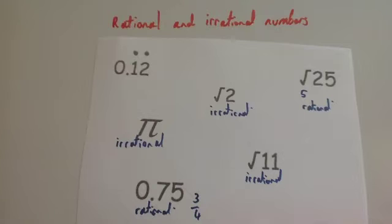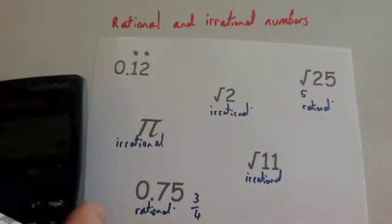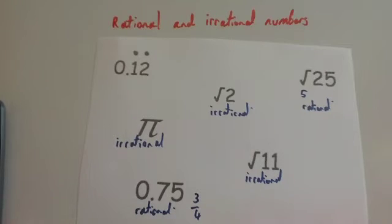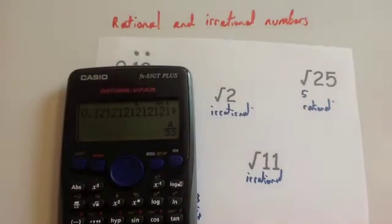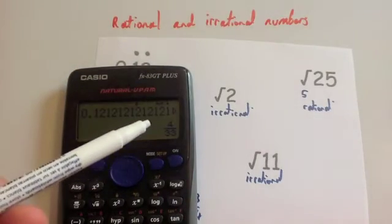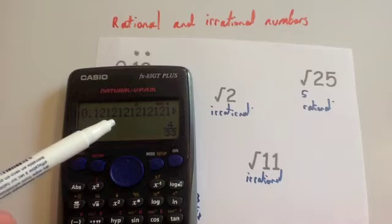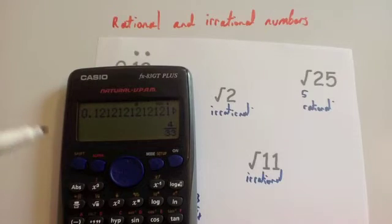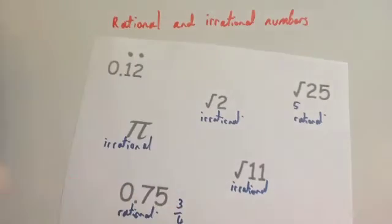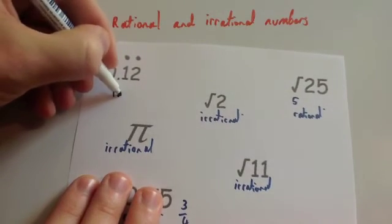There's a video on how to convert recurring decimals into fractions. Therefore, because it's a recurring decimal, you can write it as a fraction. I've actually used my calculator to help me, and it's told me that 0.12 recurring is 4 over 33. Because it can be expressed as a fraction, that is a rational number.